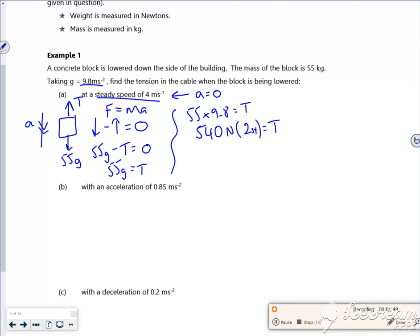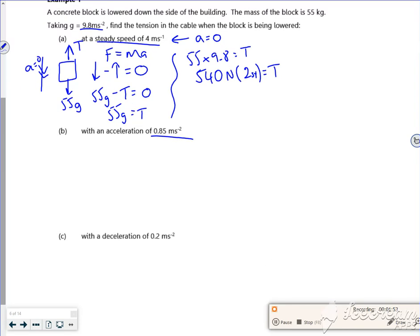The next one has an acceleration. My a was zero for the first one. Part (b): with an acceleration of 0.85 m/s². Same idea—I've got my block with weight 55g and tension T. F = ma: force in the direction of travel minus force opposing gives the resultant force, which is mass times acceleration.